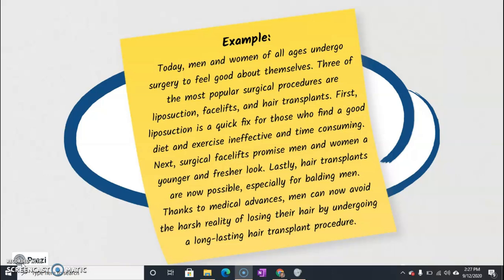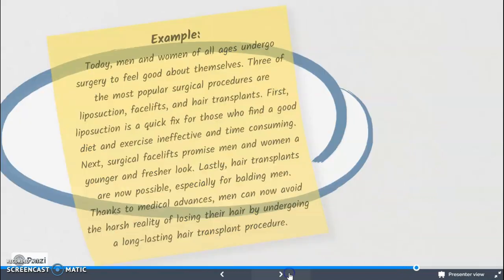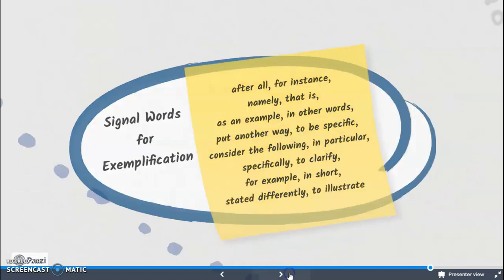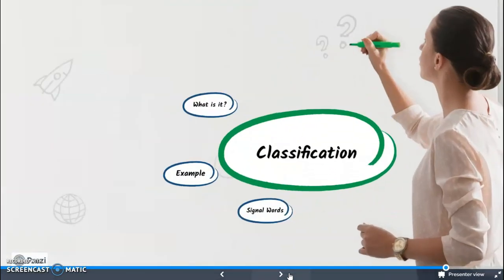There are different signal words that could be used in writing an exemplification pattern of development. We can use the following signal words. Now let's move on to the next pattern of development, which is classification.